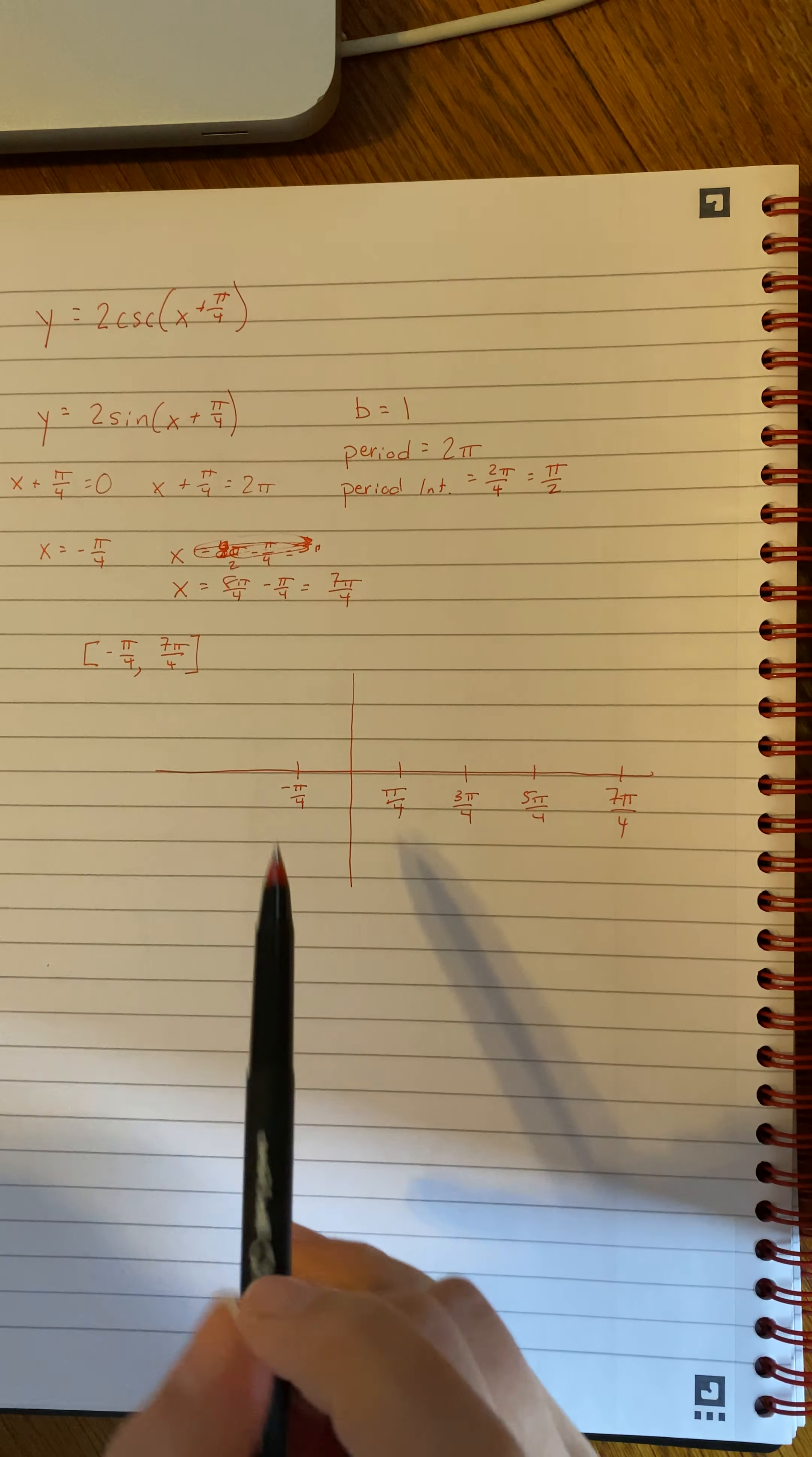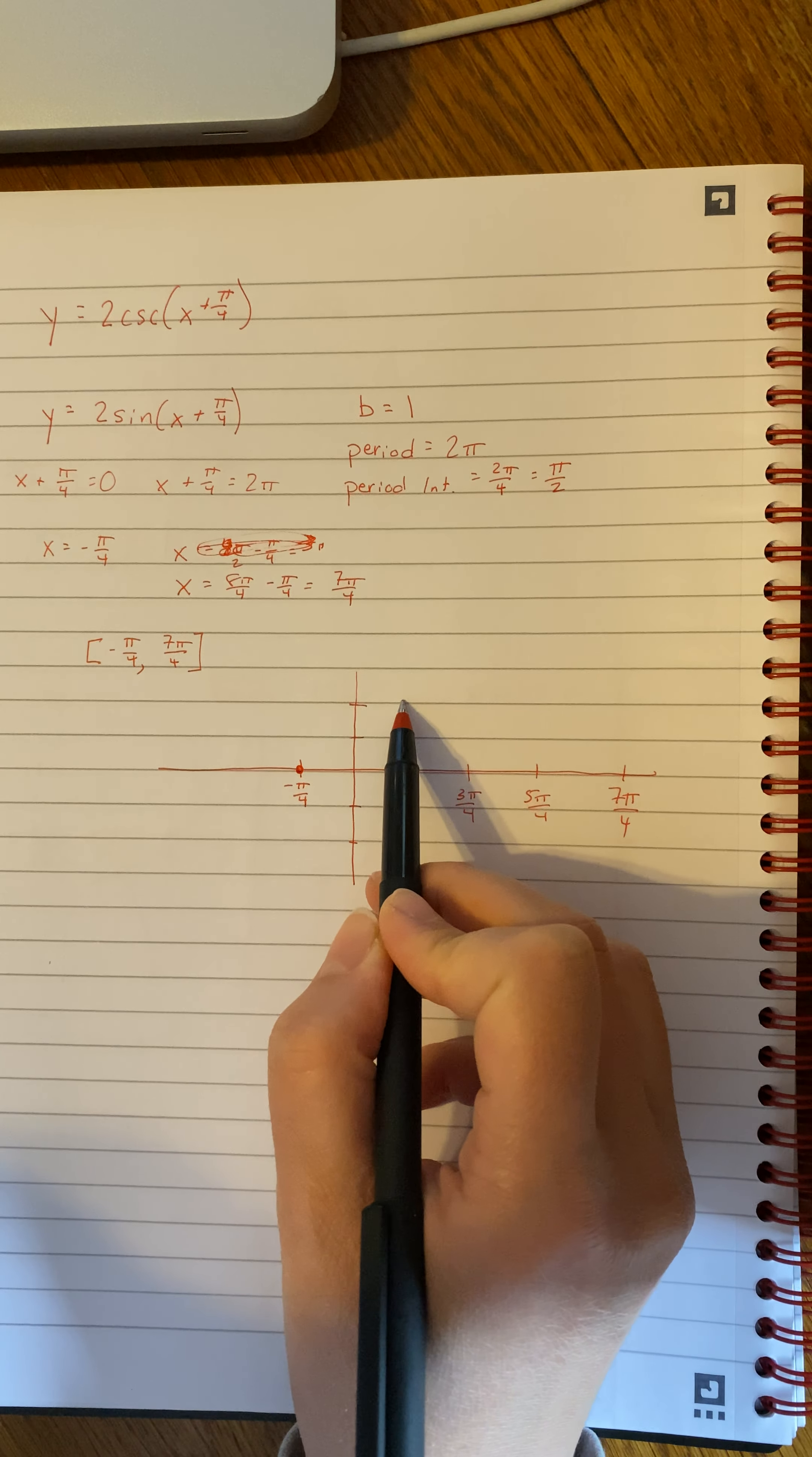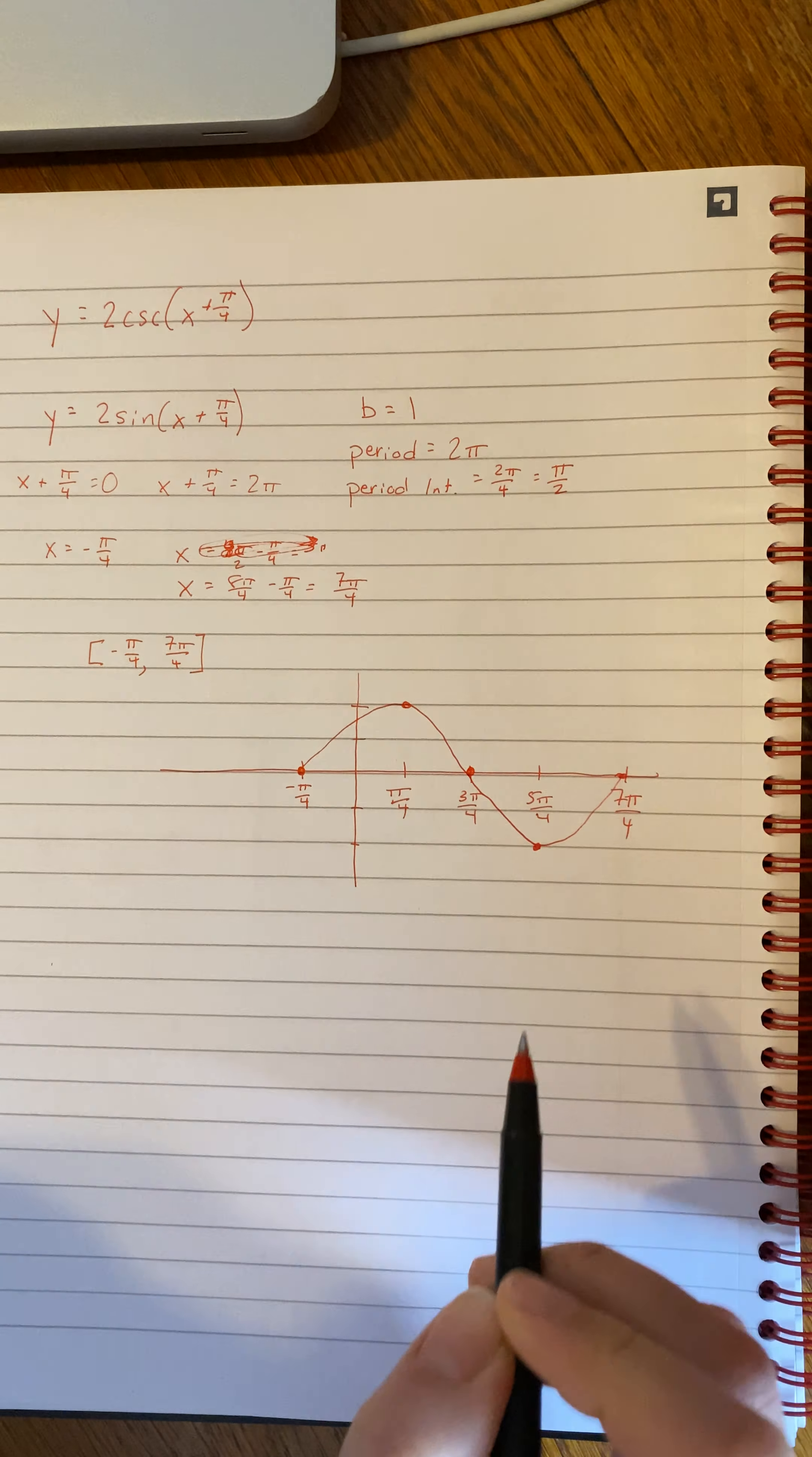So I know I'm graphing the sine. Sine starts at 0, and then I'm going to multiply my values by 2. So sine starts at 0. 0 times 2 is 0. It would go to 1 next. 1 times 2 is 2. Then 0 times 2 is 0. It would be at negative 1 times 2 is negative 2, and then back at 0. So here is my sine graph.